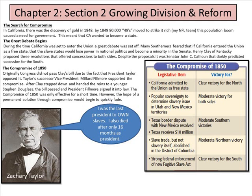The Compromise of 1850: originally, Congress did not pass Clay's bill because President Taylor opposed it. Taylor's successor, Vice President Millard Fillmore, supported the compromise. After Clay stepped down, he handed the reins to the younger Stephen Douglas — who would later do a famous debate with Lincoln. The bill passed and President Fillmore signed it into law. However, the Compromise of 1850 was only effective for a short time, and the hope of a permanent solution through compromise would quickly fade.